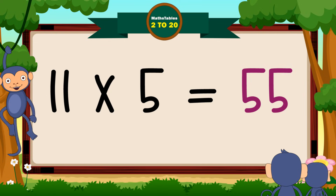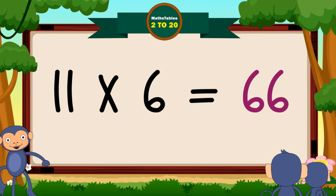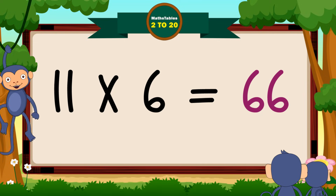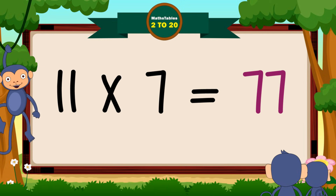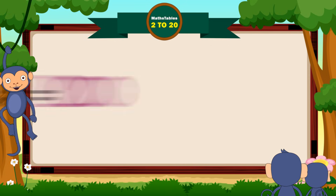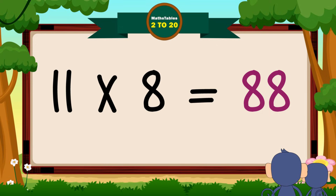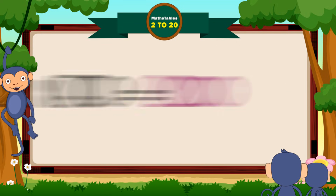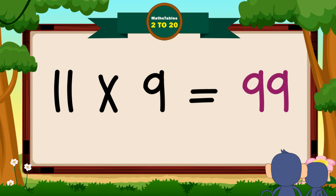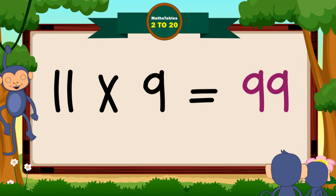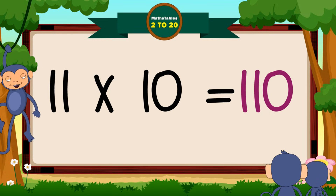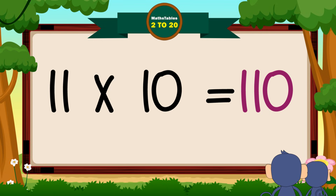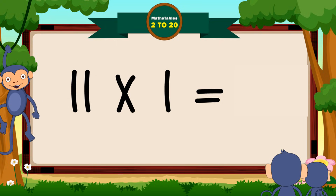Eleven sixes are sixty-six. Eleven sevens are seventy-seven. Eleven eights are eighty-eight. Eleven nines are ninety-nine. Eleven tens are hundred ten.